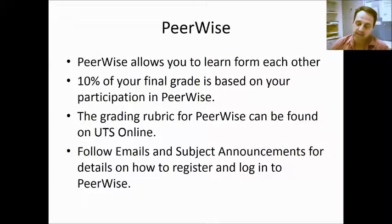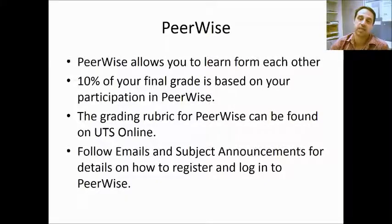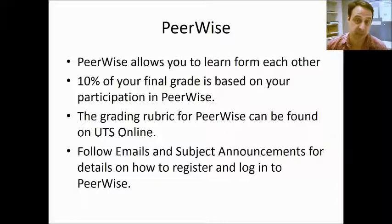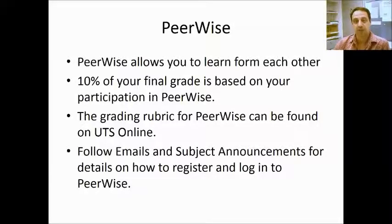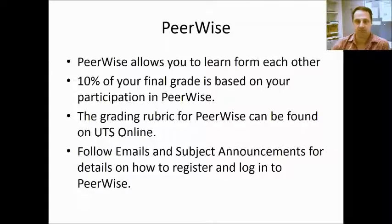One of the best ways to learn is for you to teach each other, and there's an online way to do that called PeerWise. PeerWise allows you to write multiple choice questions for each other and answer each other's questions. Ten percent of your final grade is based on your participation in PeerWise, and a rubric is available on UTS online. You'll be asked to write at least ten questions throughout the semester — five need to be submitted by the first week of May, and the other five before the end of semester exam. Please keep a note of subject announcements for how to log in to PeerWise.